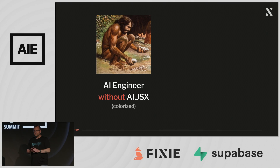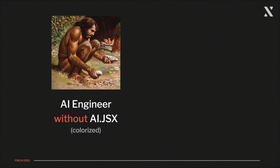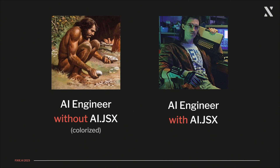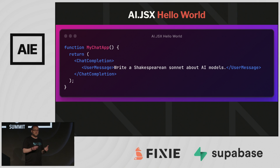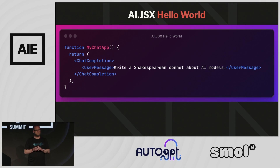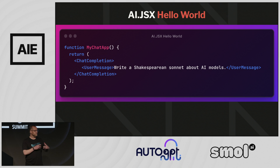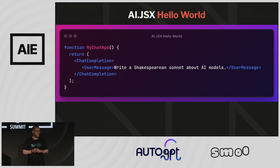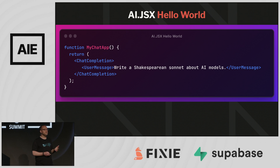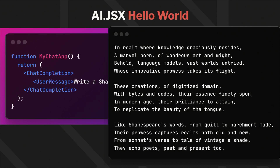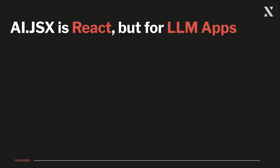Without AI JSX, this is what an AI engineer looks like today. But with AI JSX, we can all be Hacker Man or Hacker Woman. So let's show a hello world of AI JSX — a very simple example. What we're doing here is defining a complete application that uses a chat completion component, the foundation of anything that calls into an LLM. We're providing it a user message prompt: write a Shakespearean sonnet about large language models. You might get a result something like this — it's actually pretty good.